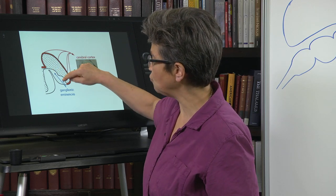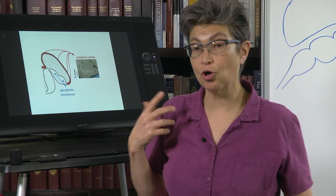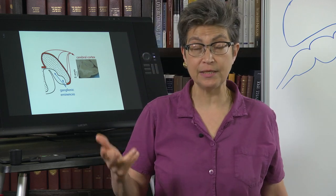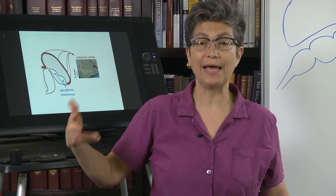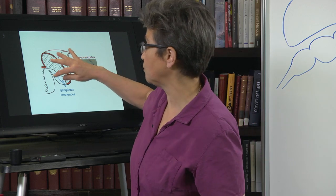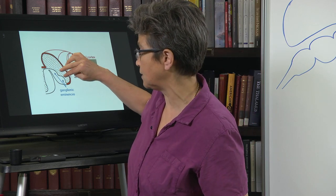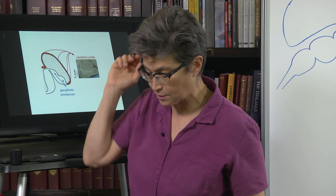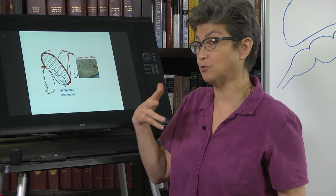The ventral part has two eminences. They are called ganglionic eminences. And this is why the basal ganglia, which are formed by two structures that derive from these ganglionic eminences, are named basal ganglia.